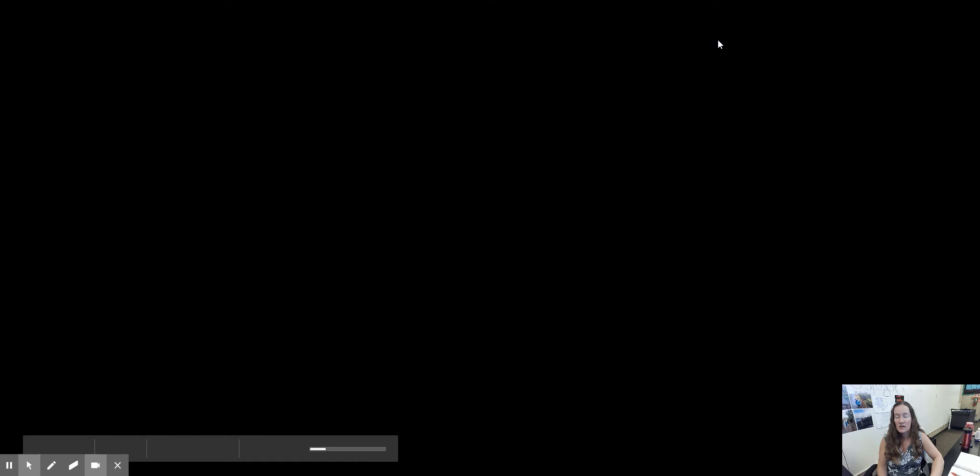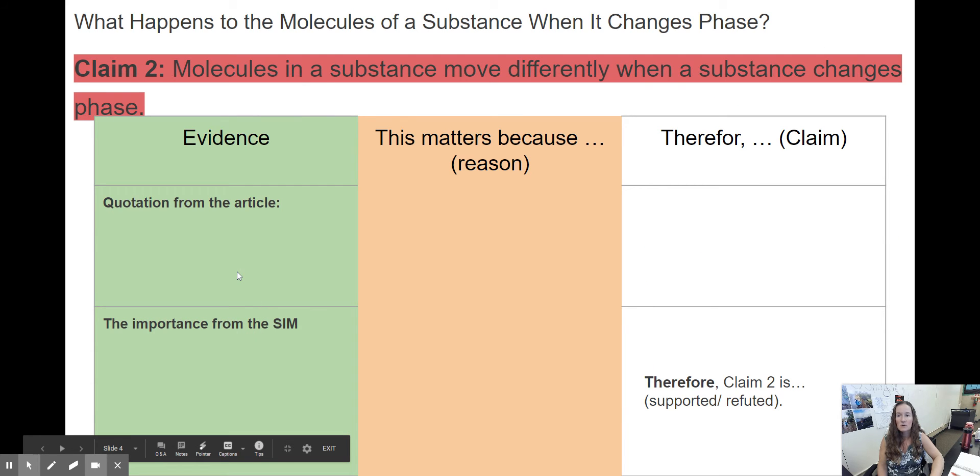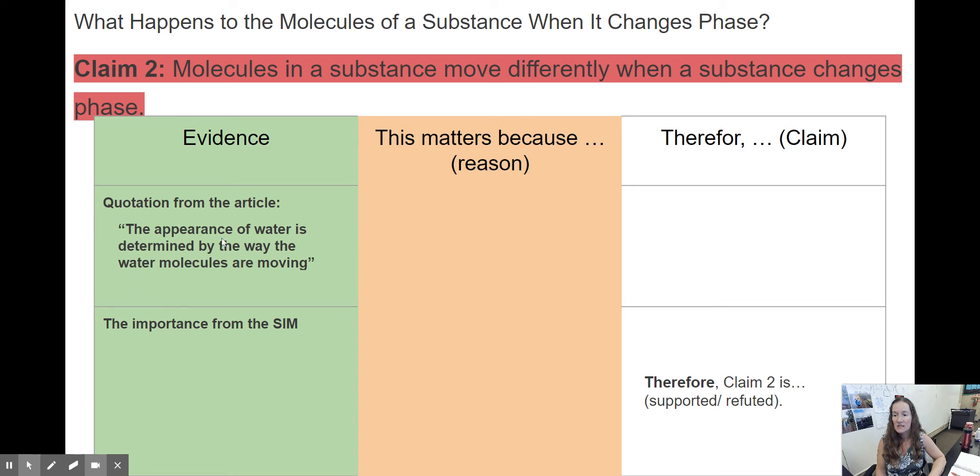We're going to go to the next slide because this one was a little bit more difficult. So we have claim 2 and now we want to connect evidence to why does that matter, why is this evidence valid? We reread the weird water article which you can find on your amplified assignment, and we pulled out the quote: the appearance of water is determined by the way the water molecules are moving.